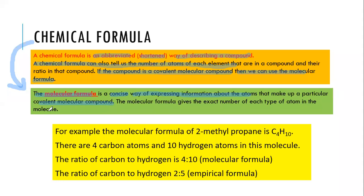For example, 2-methylpropane has molecular formula C4H10. The 4 represents we have 4 carbons and the 10 represents we have 10 hydrogens. Currently, what we need to know is there are 4 carbon atoms and 10 hydrogen atoms, and the ratio of carbon to hydrogen is 4 to 10.